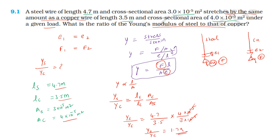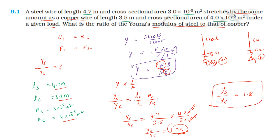This gives the ratio of Young's modulus of steel to Young's modulus of copper as the correct answer.